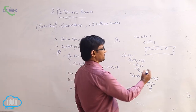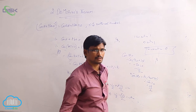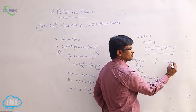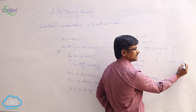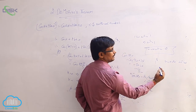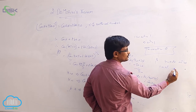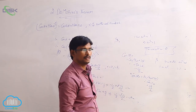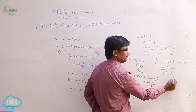Similarly, for nth roots of unity: 1 plus omega plus omega squared plus and so on plus omega to the power n minus 1 equals 0, and the product 1 into omega into omega squared and so on equals 1. In these values also, omega cubed equals 1.